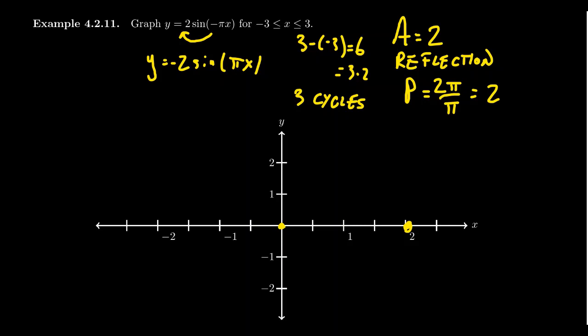So you want to think of 0, π halves, π, 3π halves, and 2π. What happens to those points? Well, when you change the amplitude, when you change the period, that's going to affect some things.